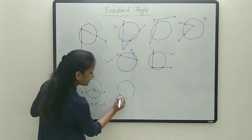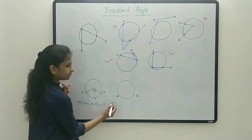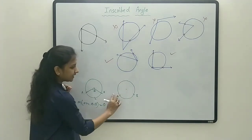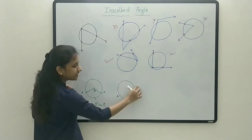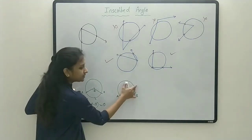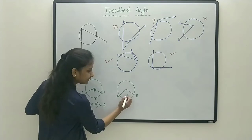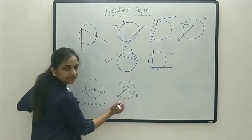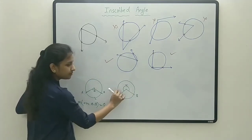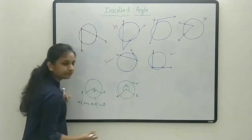Now, using the same diagram with points A and B, let's find the measure of the big arc. The angle subtended by this big arc at the center is this angle. Let's call this angle alpha, so the measure of this major arc is alpha degrees.